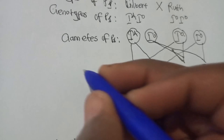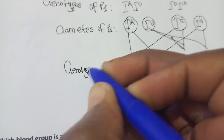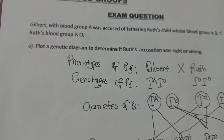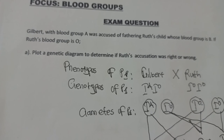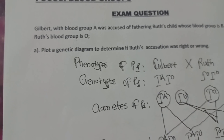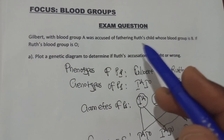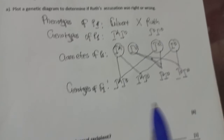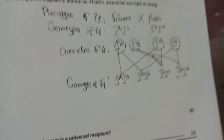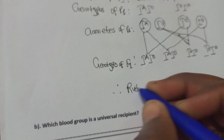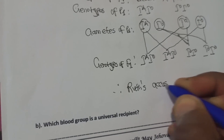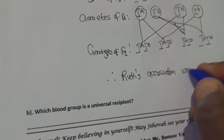These are the genotypes of the first filial generation, also called the F1 generation. Looking at the results, there is no child with blood group B. Therefore, we conclude: Ruth's accusation was wrong.